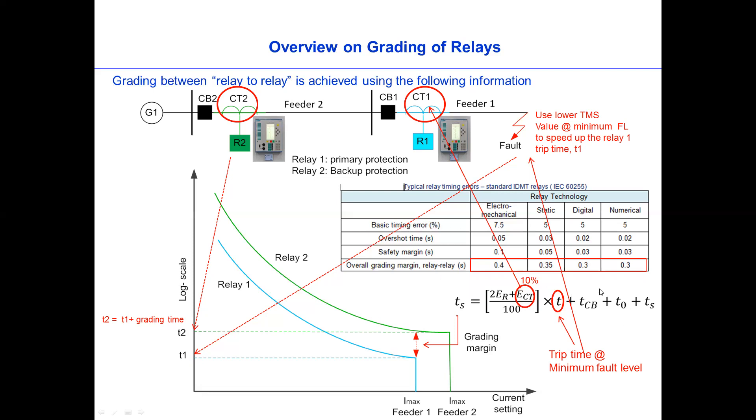And TO is what we have on this one, basically. The parameter depends on the relay technology: the basic timing error, the overshoot time, safety margin. So the TO is the overshoot time, and the TS is the safety margin.